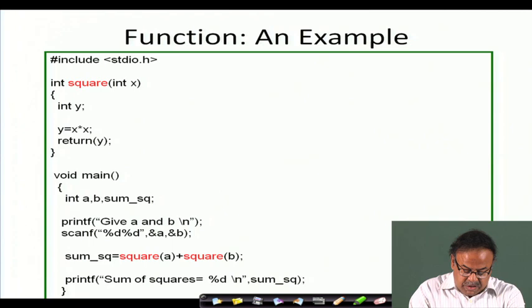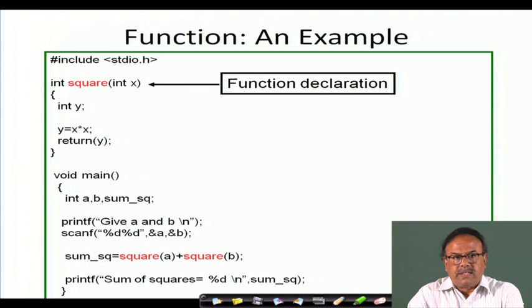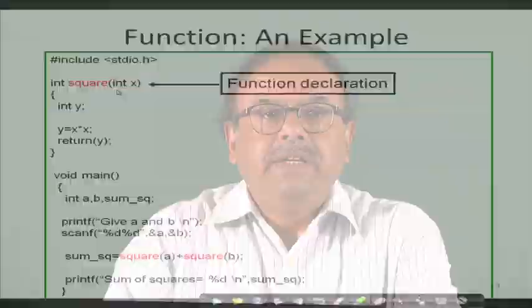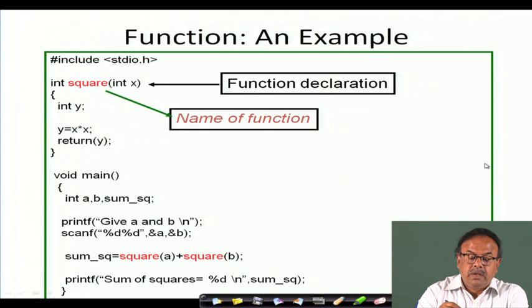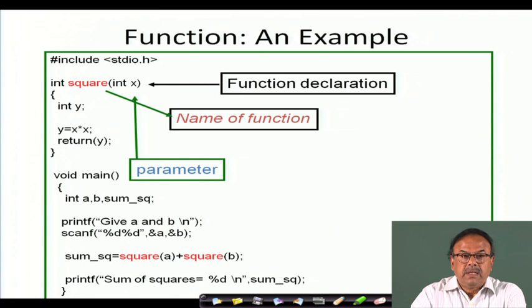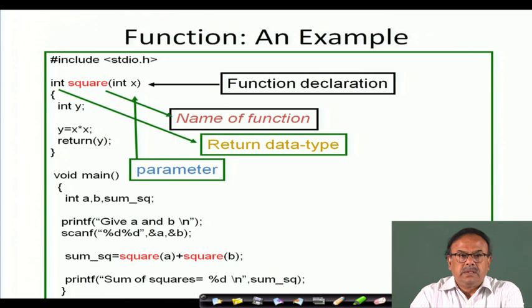Now let us look at another example. The layout is also important. Here we are first writing the function. The function declaration comes first: square of an integer x, and the square of an integer will also be an integer, so the return type of the function is int, as you can see here. The function declaration consists of the function name, the parameter x of type integer, and int as the return data type. These three together make the function declaration.